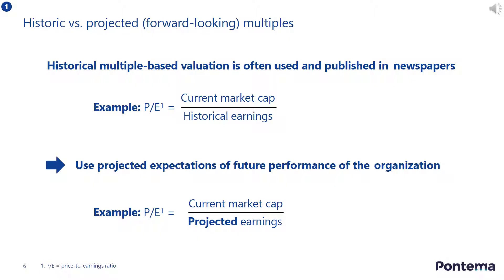For example, the price-earnings ratio can be based on historical or projected revenues. Historical multiples are often published in the business press, but forward-looking multiple-based valuations will generally provide superior insights into the value-creating potential of an organization. However, projections may not be available for the key value driver that you want to use, in which case you must work with historical figures.